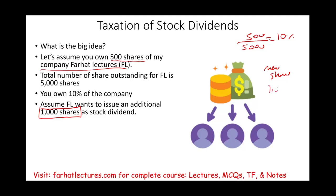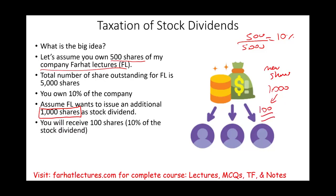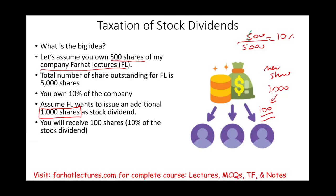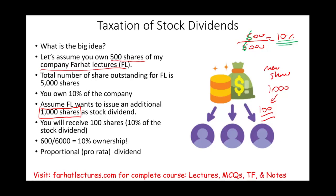I issue 1,000 new shares. You're going to get 100 of those new shares, giving you a total of 600 shares. The total number of shares outstanding becomes 6,000. You are still a 10% owner. Why? Because this dividend is a proportional, pro-rata distribution — you own 10%, so you get 10% of this transaction.